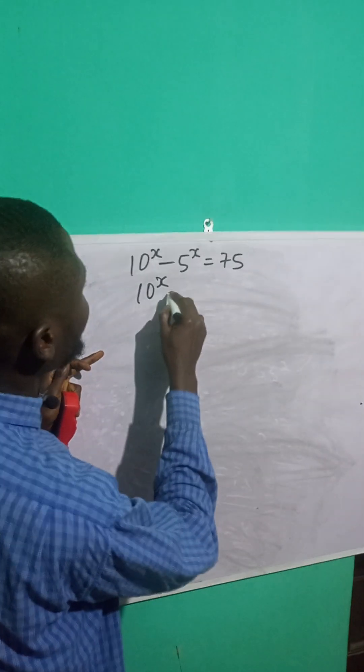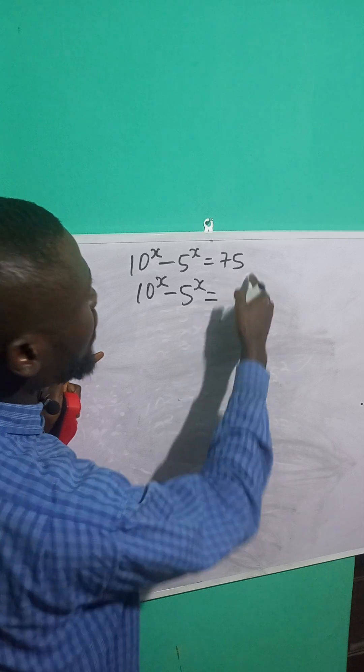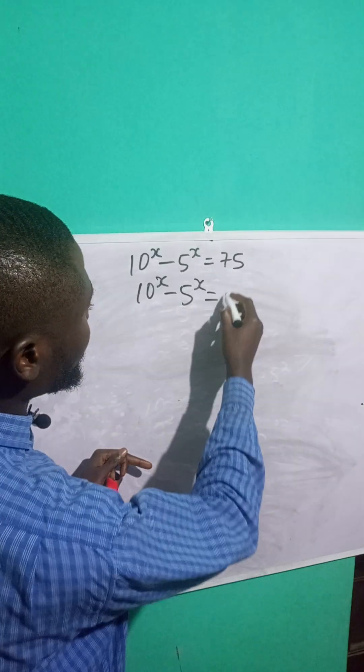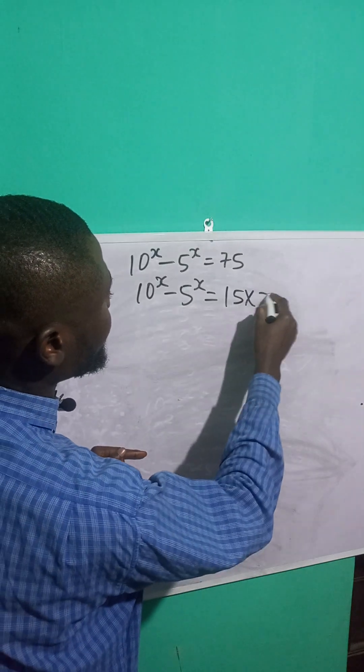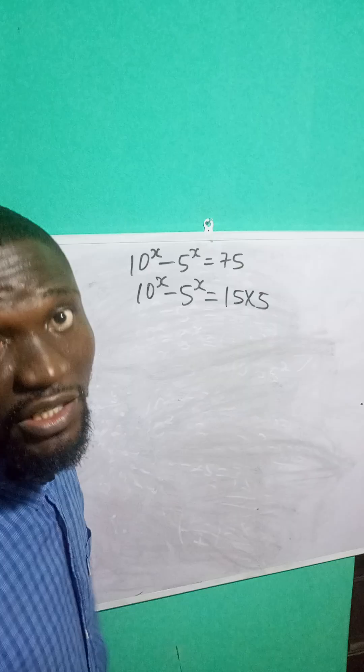So 10 raised to the power x minus 5 raised to the power x is equal to, I will simplify 75 to 15 times 5. 15 times 5 gives me 75.